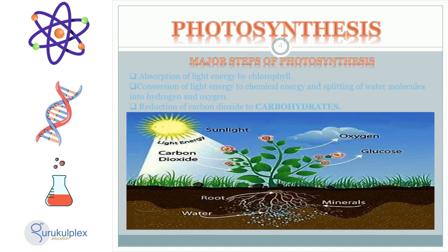Chlorophyll plays a key role in the process of photosynthesis. It absorbs light energy, which is then converted into chemical energy. The water molecules are broken down into hydrogen and oxygen, while carbon dioxide is converted to carbohydrates. This process is crucial for many living organisms as it produces the energy they require to survive.